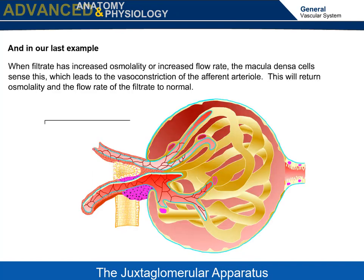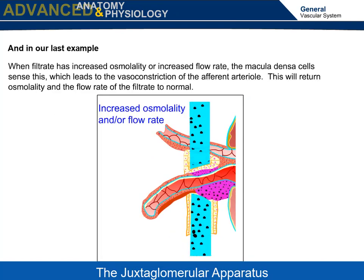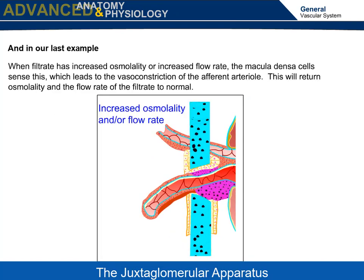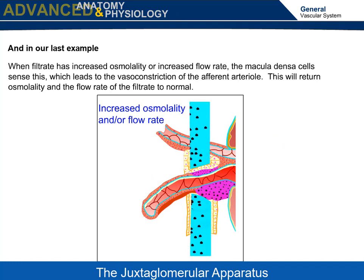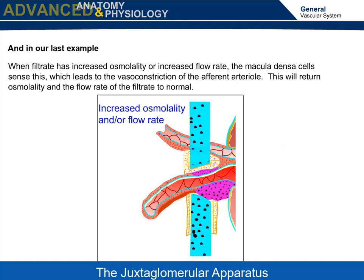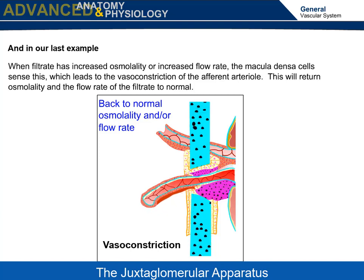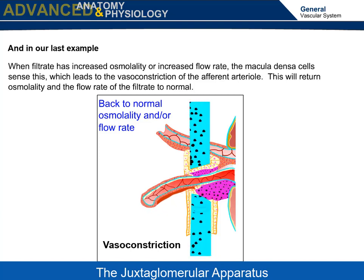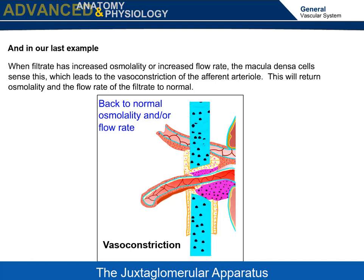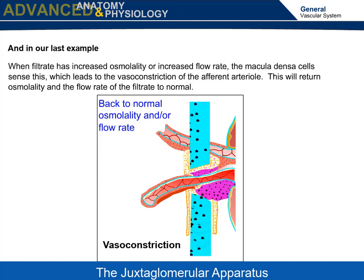In our last example, when filtrate has increased osmolality or increased flow rate, the macula densa cells sense this, which leads to the vasoconstriction of the afferent arteriole. This will return osmolality and flow rate of the filtrate to normal.